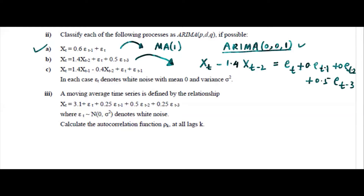If you write the general form using B squared, the left-hand side gives 1 minus 1.4 B squared times Xt. This is a quadratic polynomial — degree 2, not 1. So if you write the characteristic equation for the AR part, it will be 1 minus 1.4 z squared equals 0.